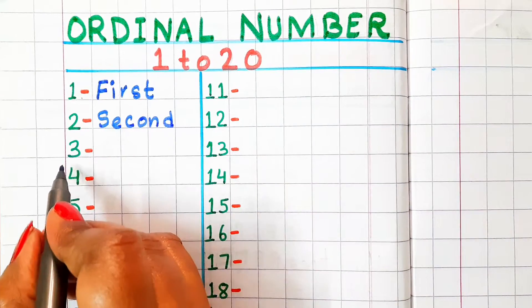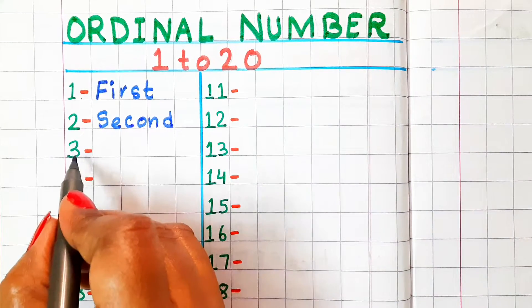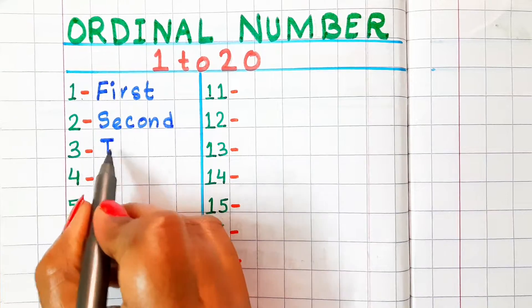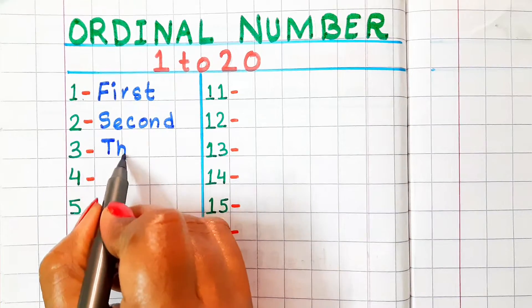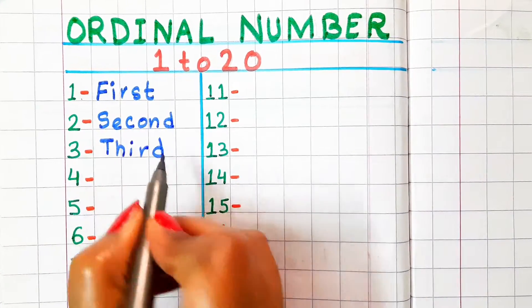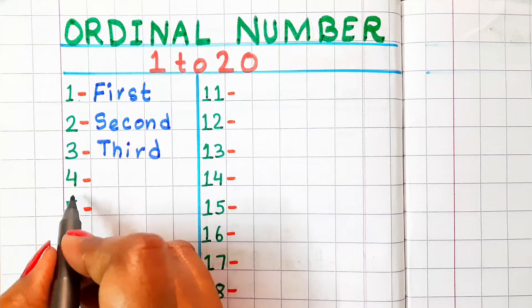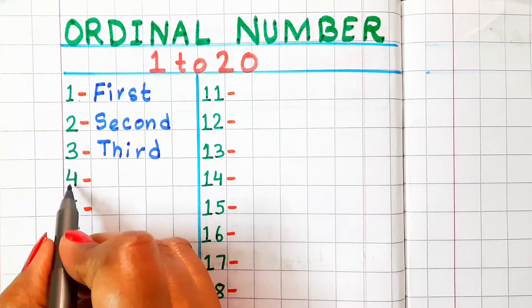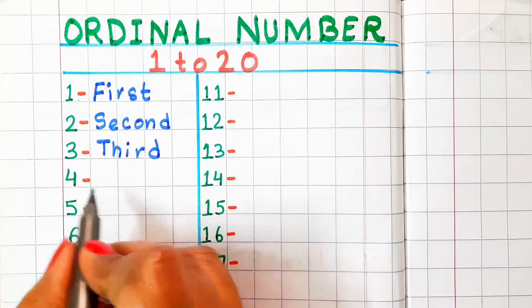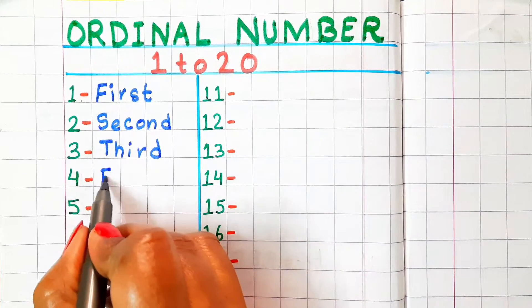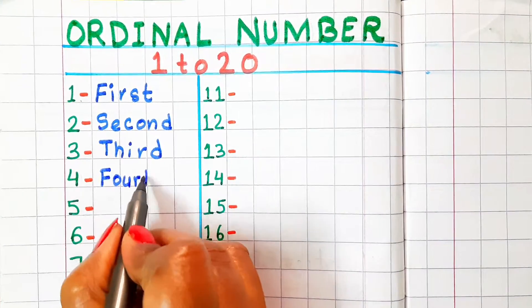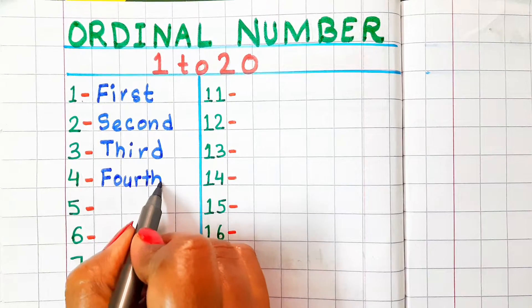3 — in ordinal number, it is called third. Spelling is T-H-I-R-D. 4 — in ordinal number, it is called fourth and the spelling is F-O-U-R-T-H.